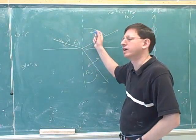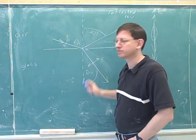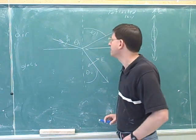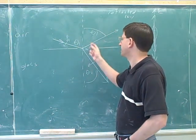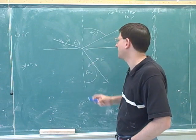This is theta 1, so this must be theta 1. And then we could use Snell's law to find theta 2. Now we're going to prove there must be some angle at which we cannot have reflected light.